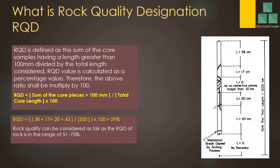When you find the RQD, you have to consider the segments having a length greater than 100 mm. You can take a segment if it is greater than 100 mm. Smaller segments cannot be taken when determining the RQD value. For example, a segment of 200 mm can be considered, and one of 443 mm can also be considered. Where there is no core recovery — no sample — you cannot take that part either.